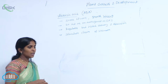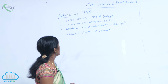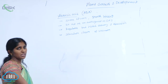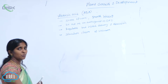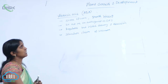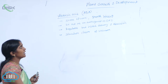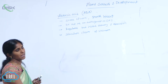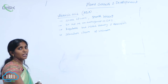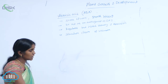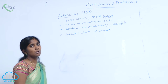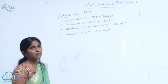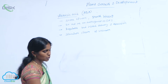The activities of abscisic acid are always opposite to gibberellic acid, hence it acts as an antagonist to gibberellic acid. It promotes bud and seed dormancy and also abscission, and it stimulates the closure of stomata.